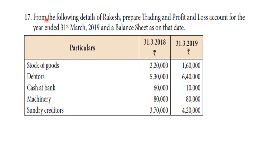Hello friends, welcome to our channel. This is for 12th standard accounts, Unit 1: Accounts from Incomplete Records. From the following details of pro forma cash, prepare a trading and profit and loss account for the year ended 31st March 2019, and a balance sheet as on that date.